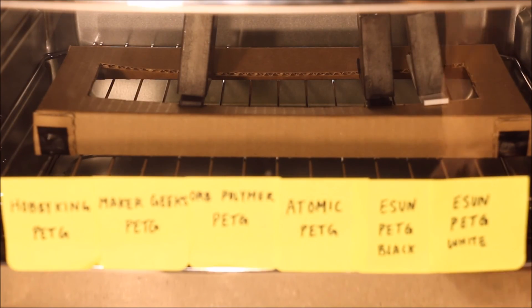Unfortunately, the video cut out here at the end, but the E-Sun and Maker Geeks PETG both showed major deformation at just over 80 degrees C. Thanks for watching and I hope you learned something new today.